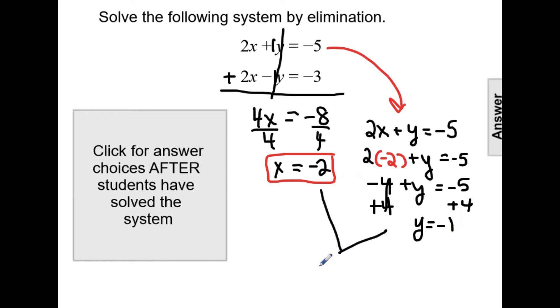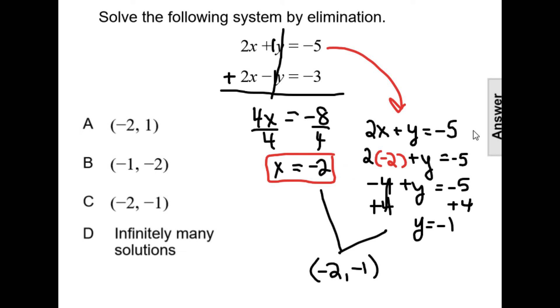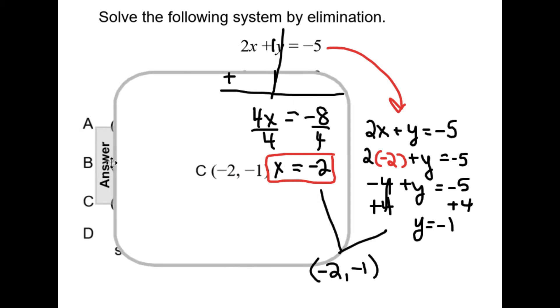Combining my two values to write as one ordered pair would give me the point negative 2, negative 1. And looking at my answer choices, that makes our solution C.